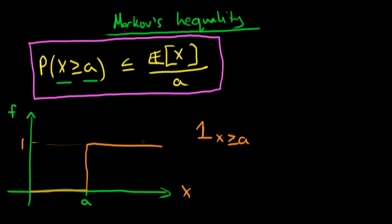What happens to that indicator function if I multiply it by the constant a? It doesn't change the value of the function if x is less than a — it still runs along the x-axis and equals 0. But for values of x which are greater than or equal to a, our function now takes a value of a rather than 1. It's still a step function, just with height a for x ≥ a.